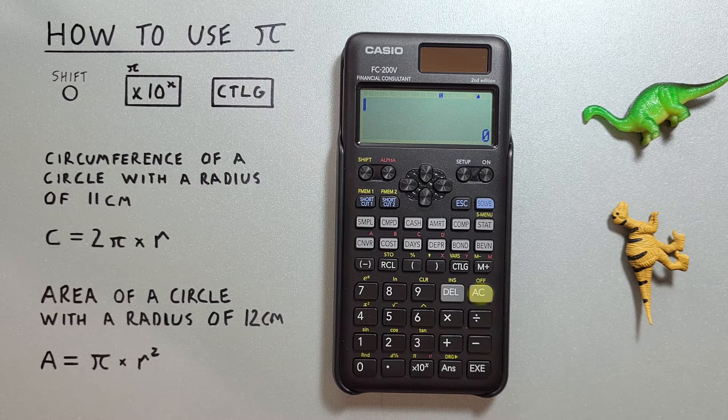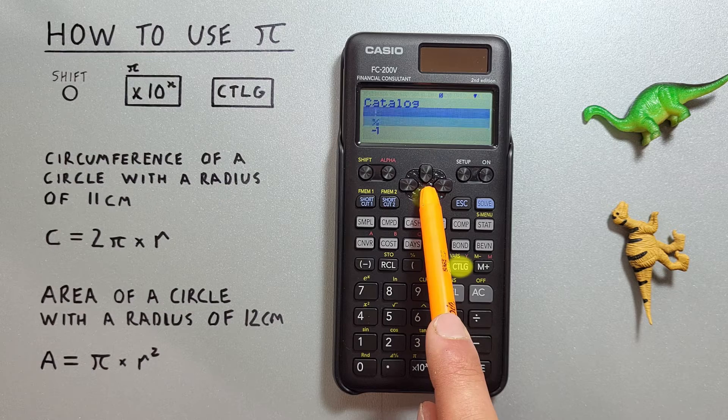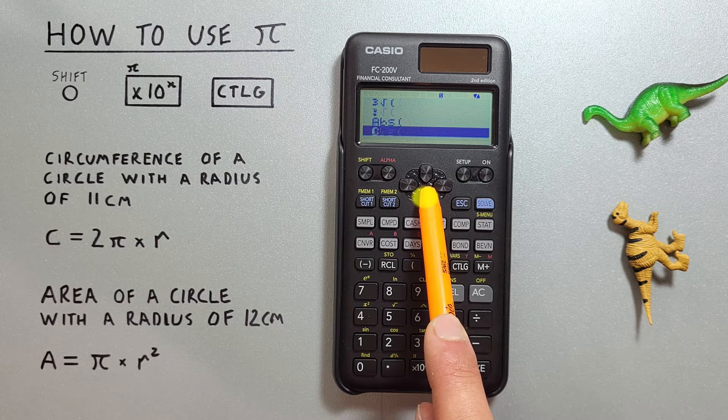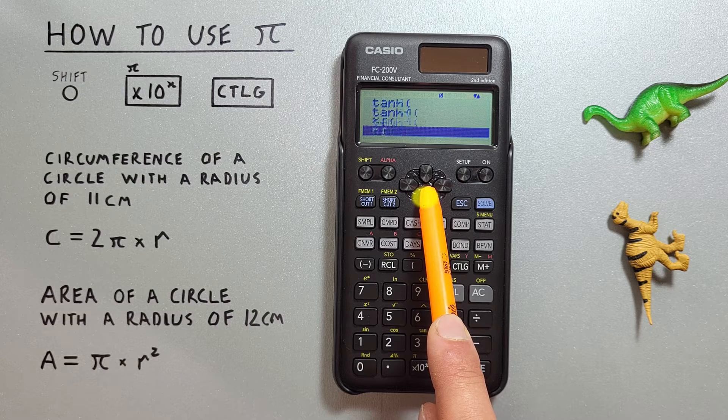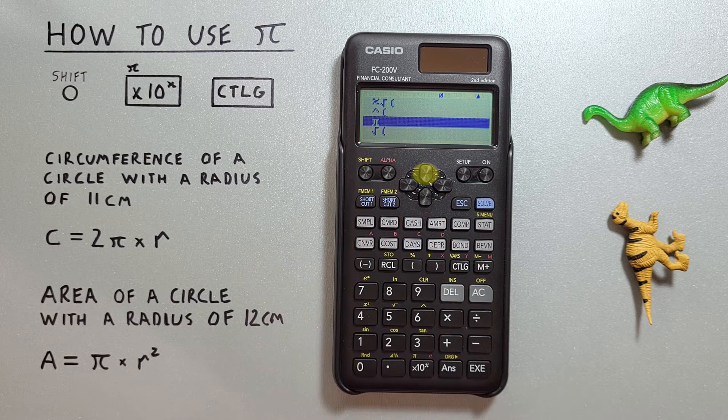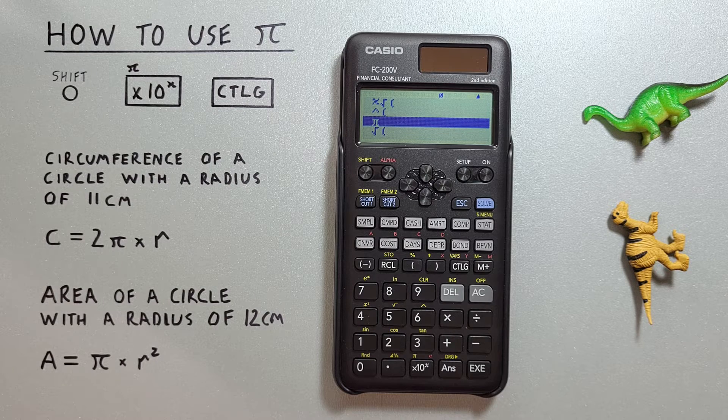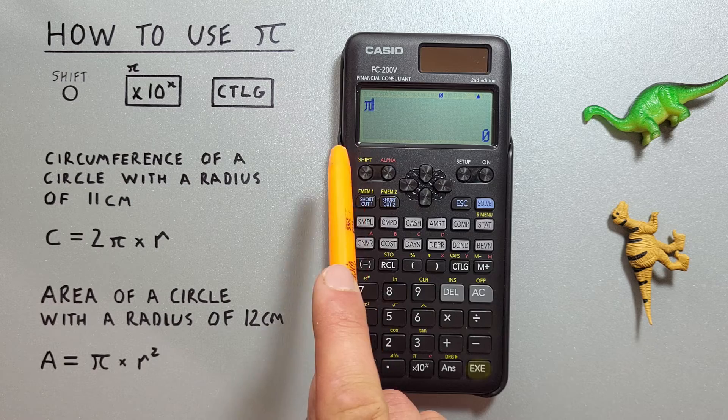Our second option is to go to catalog and scroll all the way down to the bottom, and select Pi from our catalog menu there. Press exe, and again we get Pi on our screen.